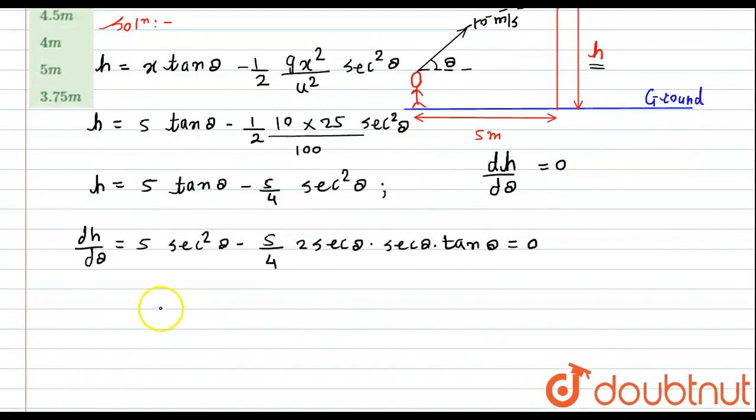From here, what we get? If you see here, sec into sec will become sec² theta. We can take 5 sec² theta as common. It will remain 1 minus 1/2 of tan theta. This should be equals to 0. Now 5 sec² theta can't be equals to 0, so 1 minus 1/2 tan theta will be equals to 0.